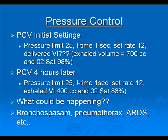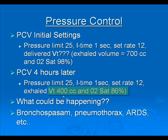Let's look at how we would set some basic pressure control settings. For example, we could set a pressure limit of 25, an inspiratory time of one second, and a set rate of 12. The delivered tidal volume is variable depending on compliance and resistance. If we can get a tidal volume of 700 cc's and a targeted saturation above 90%, that would be good. However, if four hours later we checked the ventilator and the pressure limit, inspiratory time, and rate were all the same, but the tidal volume was only 400 cc's and oxygen saturation was only 86%, what would be happening? If you're in any pressure-limited mode and your tidal volume is falling, that typically means resistance is increasing.